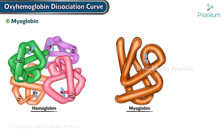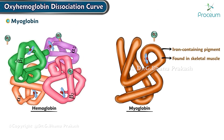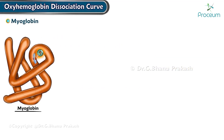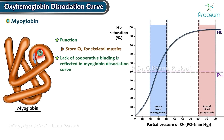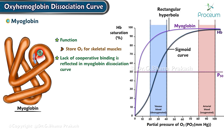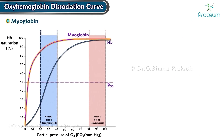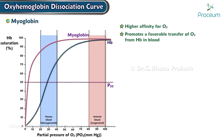An interesting contrast to hemoglobin is myoglobin, an iron-containing pigment found in skeletal muscle. Myoglobin resembles hemoglobin but binds one rather than four moles of oxygen per mole of protein. Myoglobin's main function is to store oxygen for skeletal muscles to use. The lack of cooperative binding is reflected in the myoglobin dissociation curve — a rectangular hyperbola rather than the sigmoid curve observed for hemoglobin. The leftward shift of the myoglobin-oxygen binding curve demonstrates a higher affinity for oxygen, promoting favorable transfer of oxygen from hemoglobin in the blood.